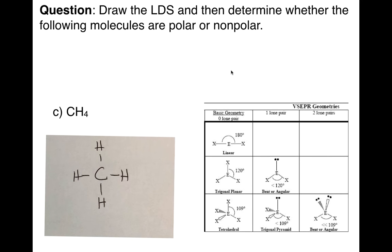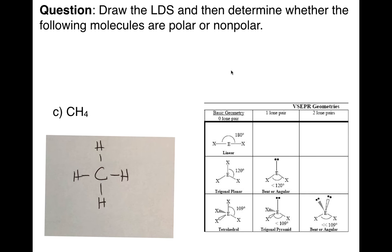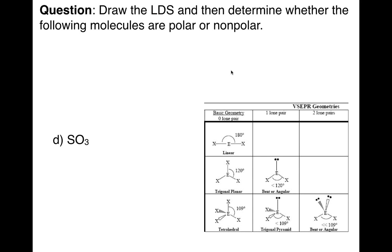Next: CH4. If I were to draw CH4, I have four atoms and no lone pairs of electrons — that gives a tetrahedral shape with 109 degrees. The pull is equal in all directions, so CH4 is non-polar. Next: SO3. SO3 is kind of hard to draw, so make sure you actually try it on your own. I have three atoms and no lone pairs of electrons, so that gives a trigonal planar geometry, which is non-polar.